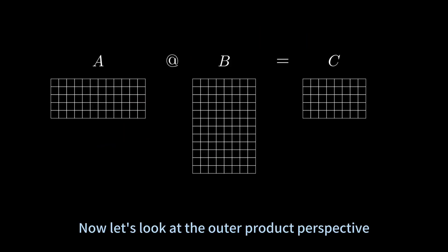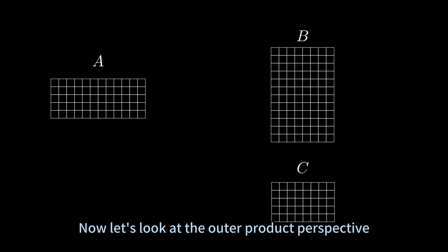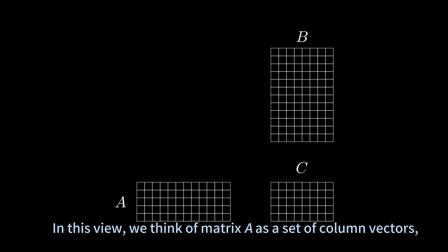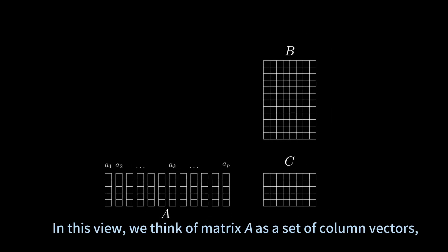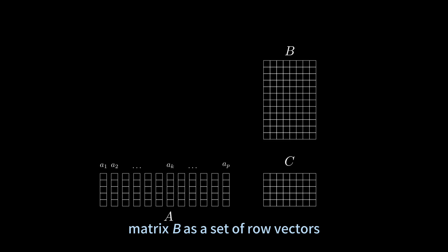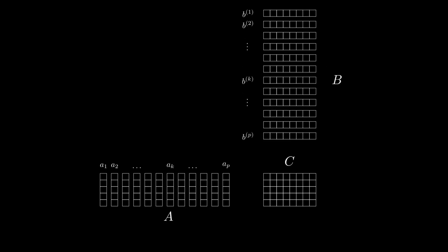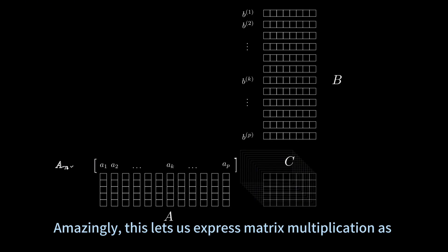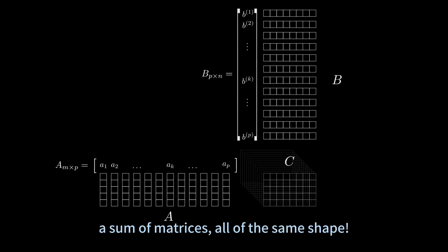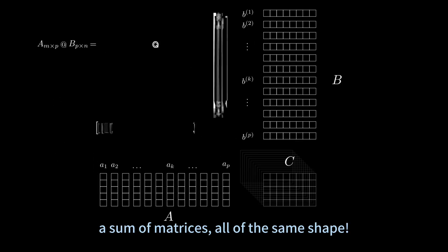Now let's look at the outer product perspective. In this view, we think of matrix A as a set of column vectors and matrix B as a set of row vectors. Amazingly, this lets us express matrix multiplication as a sum of matrices, all of the same shape.